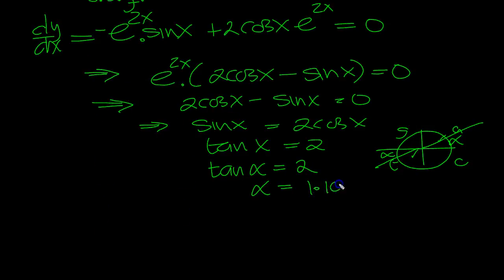1.107, 1.107 dot dot dot. So x is equal to, then the first one will be round to here, 1.107 dot dot dot.